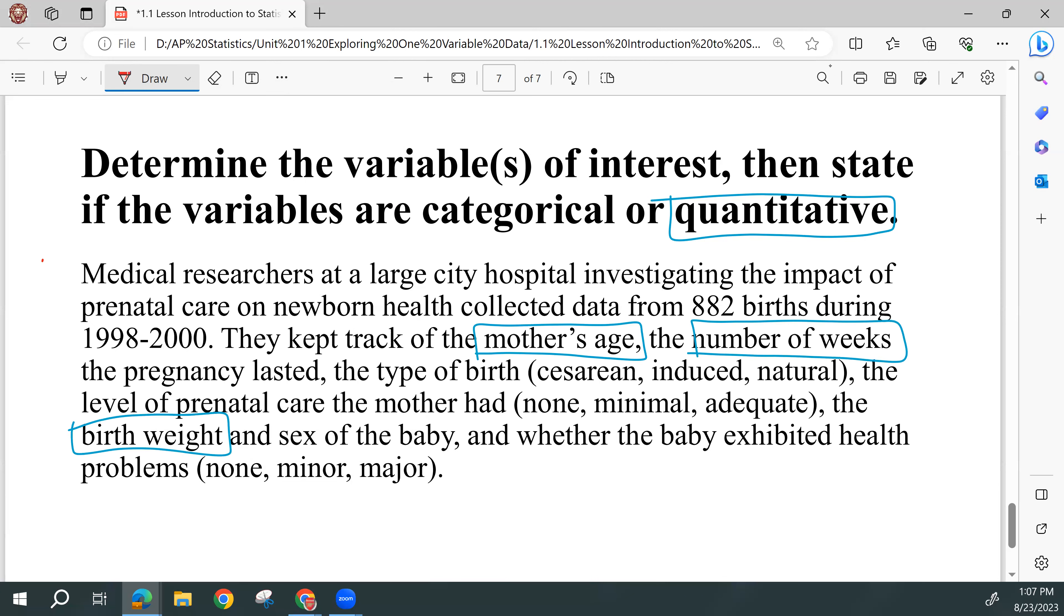So the type of birth, the way mom gave birth would be categorical. The level of prenatal care, that means care before birth. The gender of the baby, sex of the baby. And then if there were any sort of health problems, you can see we've even listed some of the categories: none, minor, or major. So all the variables that we can put each of the babies into categories, but not necessarily measuring anything with any sort of units.